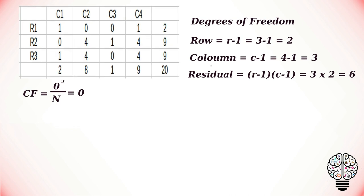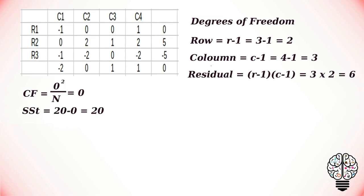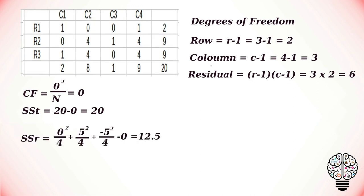Next, we calculate the sum of squares total. To do that, we square each value in the rows and columns, find the row totals and column totals, find the grand total for that, and subtract the correction factor. This gives us a sum of squares total value of 20. Next, we calculate the sum of squares of the row by taking each row total value and dividing by the number of values in each row, which gives us 12.5. Since our correction factor is 0, we subtract it and get our sum of squares of the row value as 12.5.